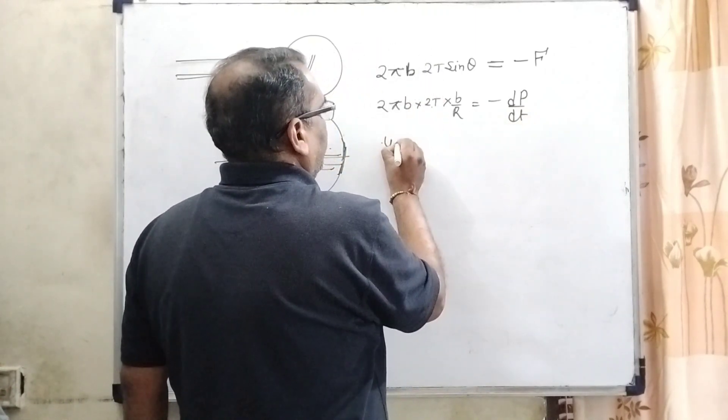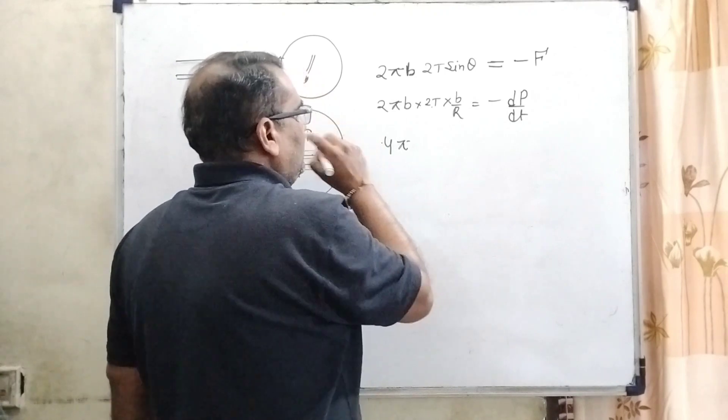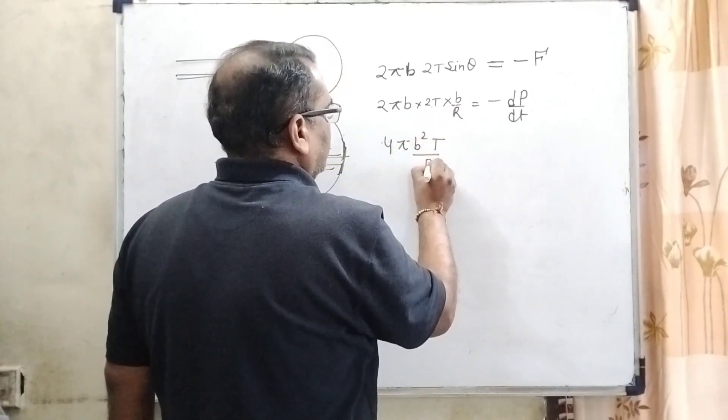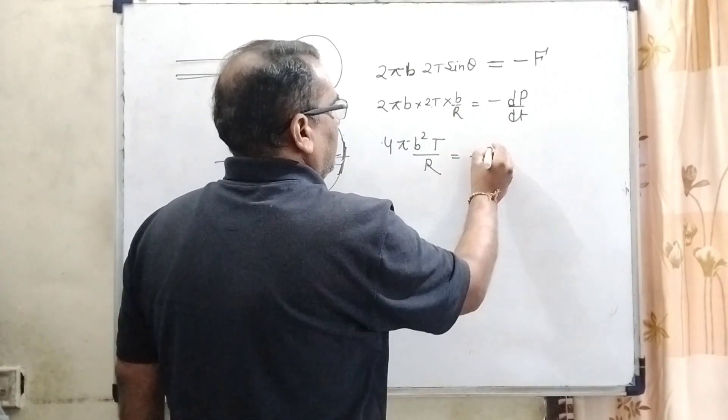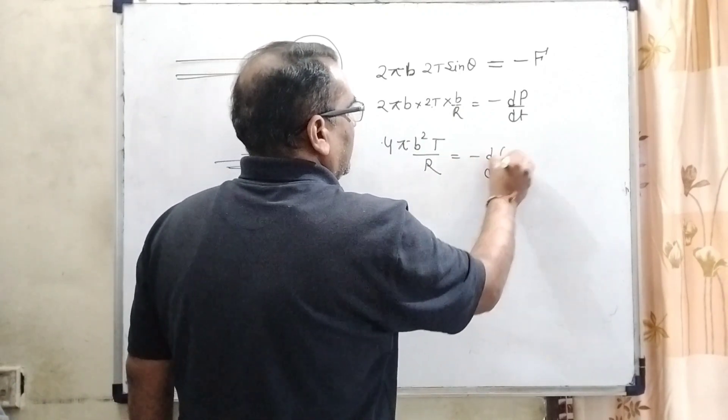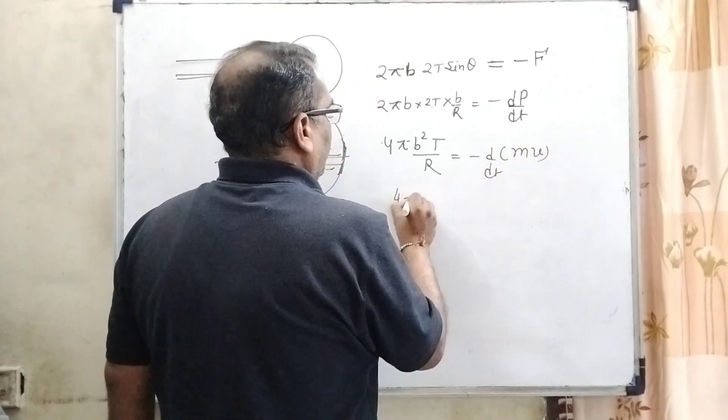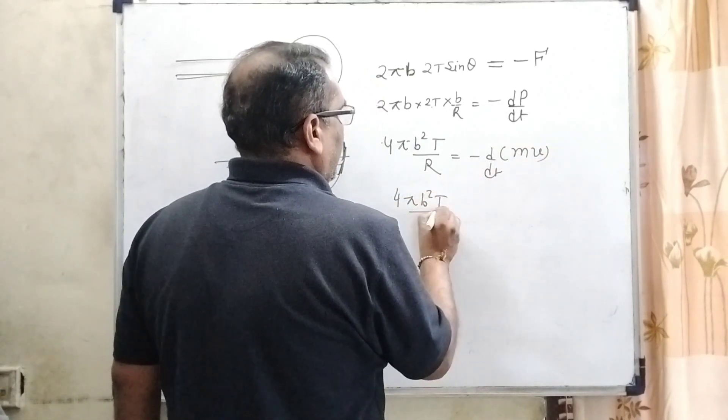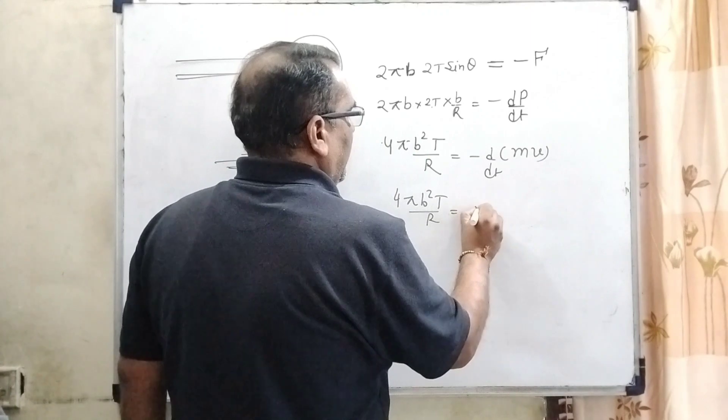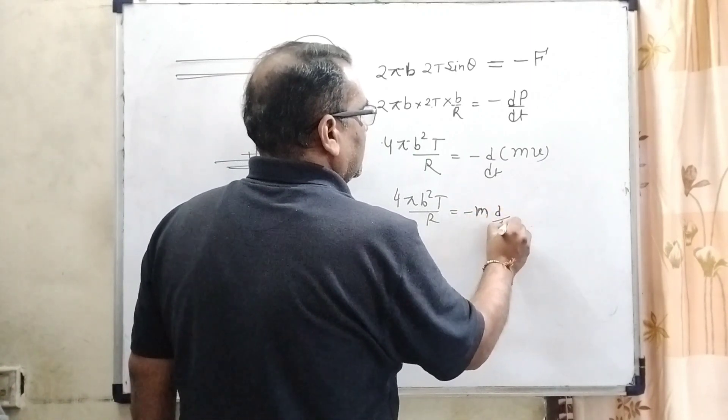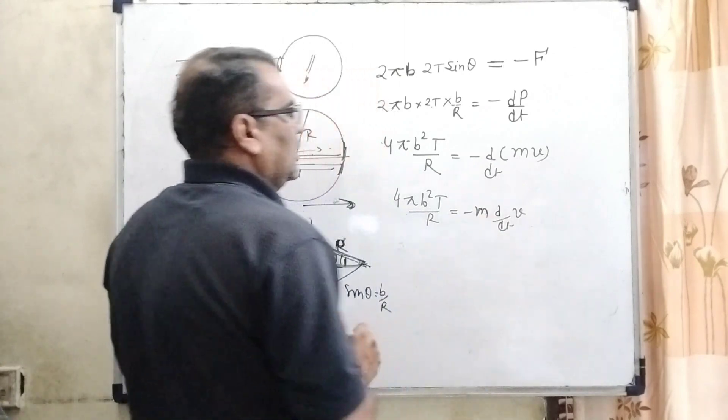Now simplifying, 4πB²T/R equals minus dP/dt. In place of momentum we can write Mv. So 4πB²T/R equals minus M times dv/dt, where v is variable.